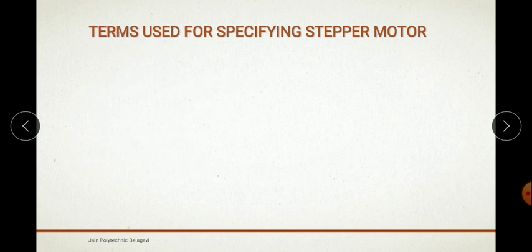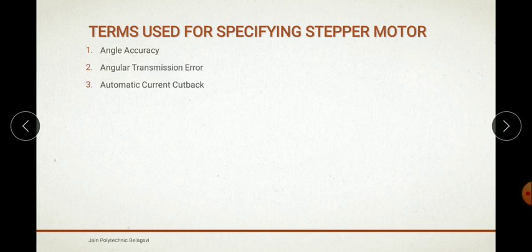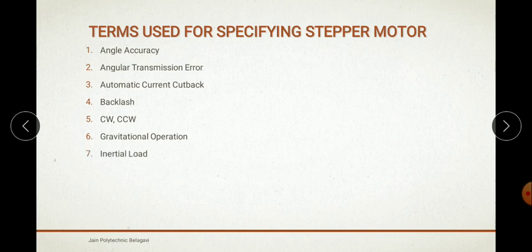Next come the terms used for specifying a stepper motor: angle accuracy, angle transmission error, atomic current, cutback, backlash, clockwise, counterclockwise, gravitational operation, inertial load, misstep, resonance, and thrust load.